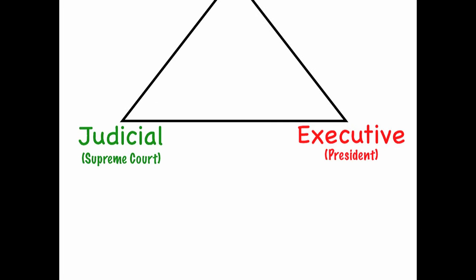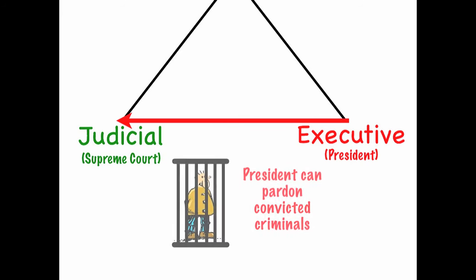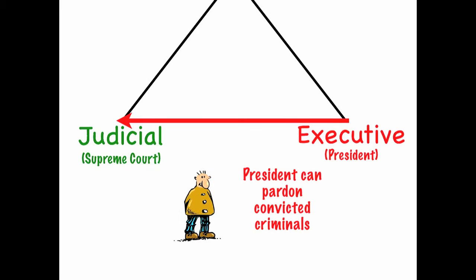The President has power over the Supreme Court because the President can pardon convicted criminals. When the Supreme Court finds someone guilty, the President has the power to excuse that person from punishment for the crime.